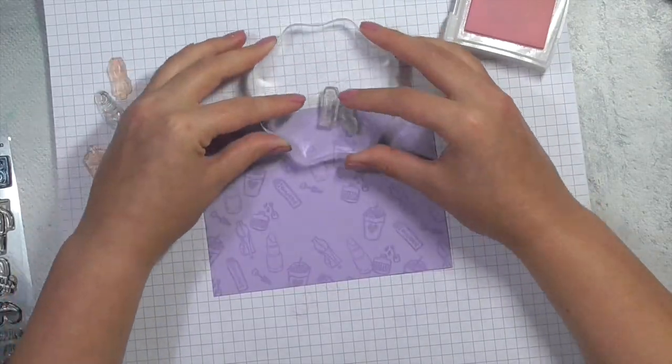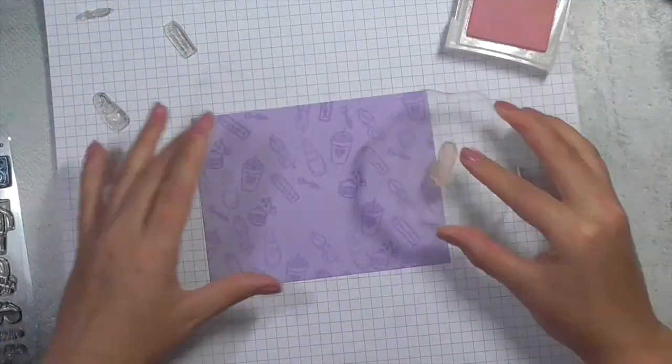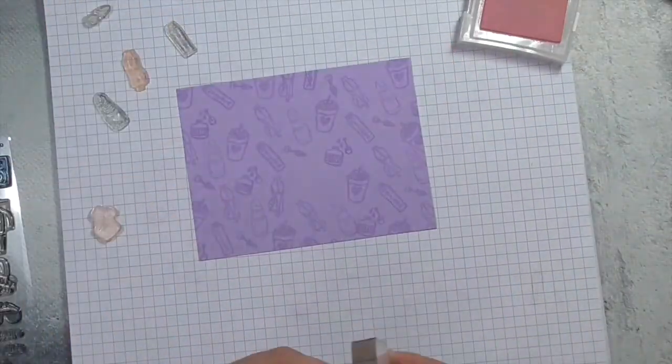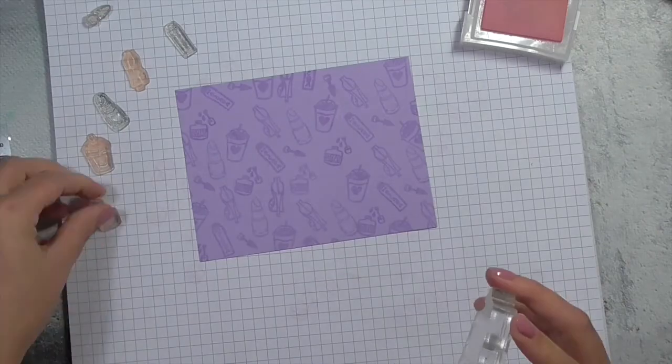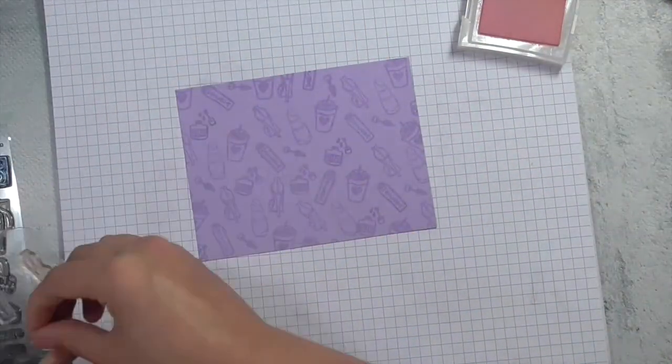Once I've gone ahead and filled in most of those gaps, I'm just going to remove the majority of the stamps and then just take each stamp individually and fill in some of those gaps.